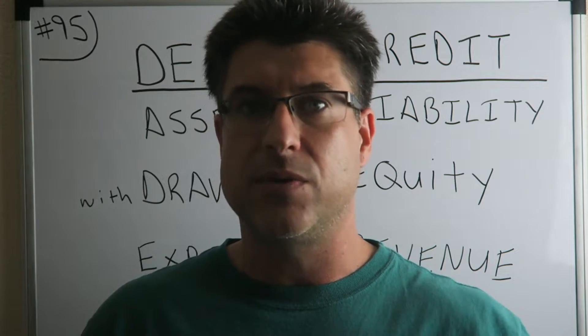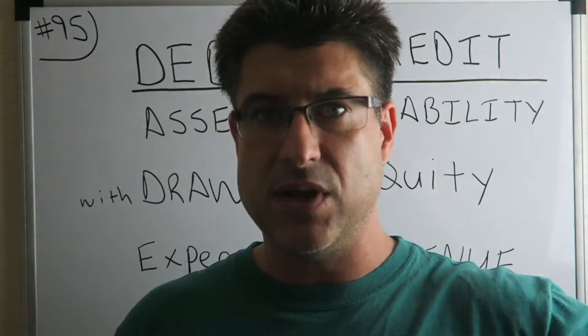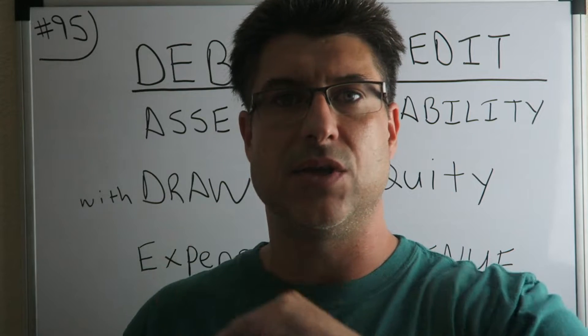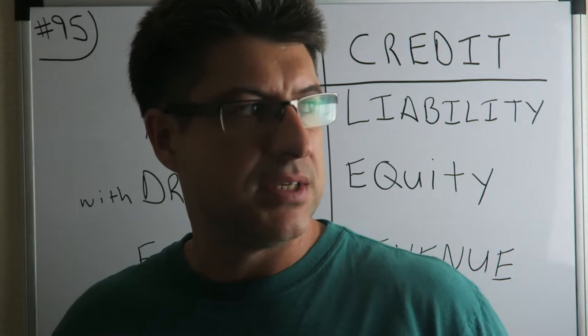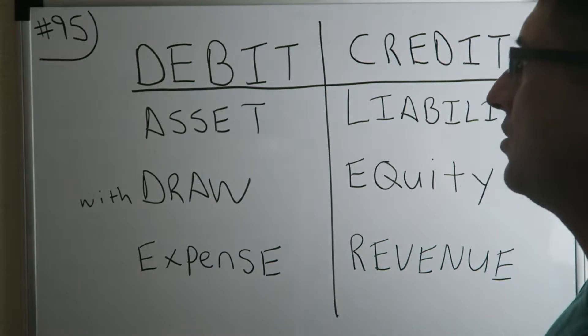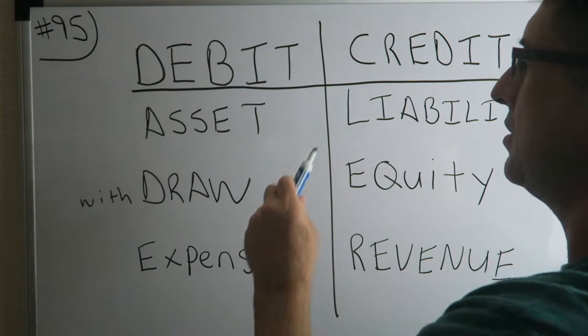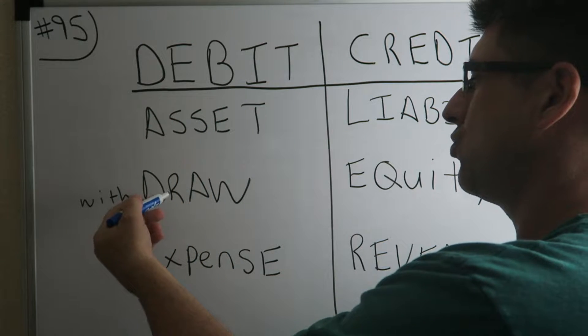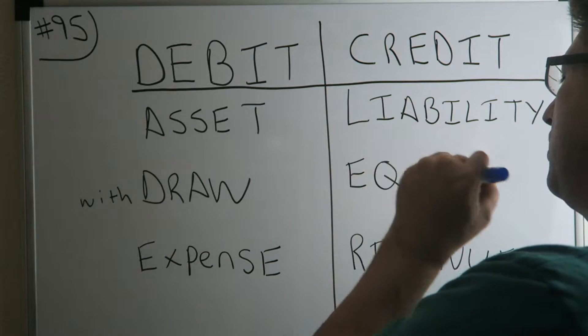If you don't know about DC ADLER, please click the link to the playlist or go to my channel and watch some of my other videos or type in DC ADLER in the YouTube search bar. DC ADLER is, and that's the mnemonic he's talking about, DC debit credit. A asset, draw, expense. LER liability, equity, revenue.